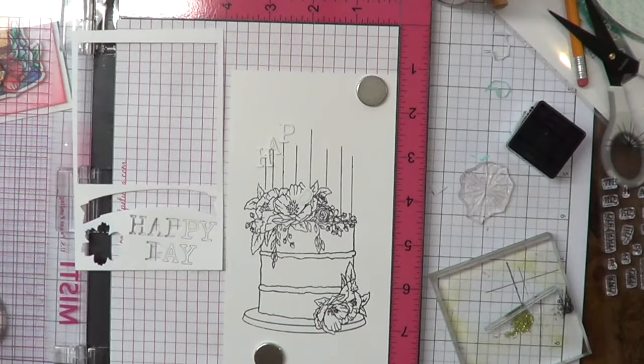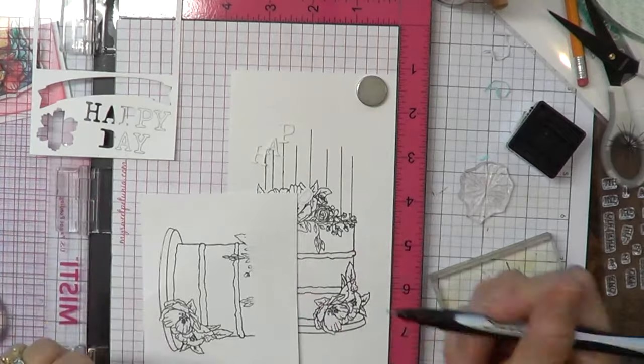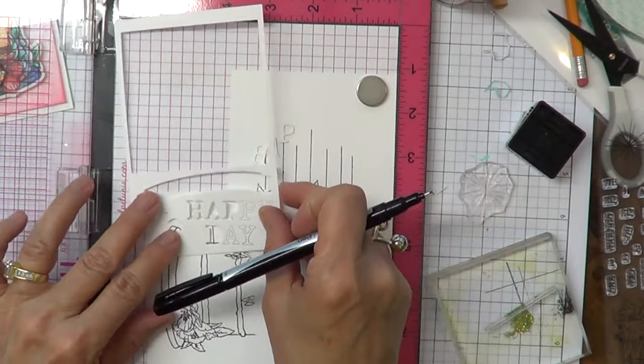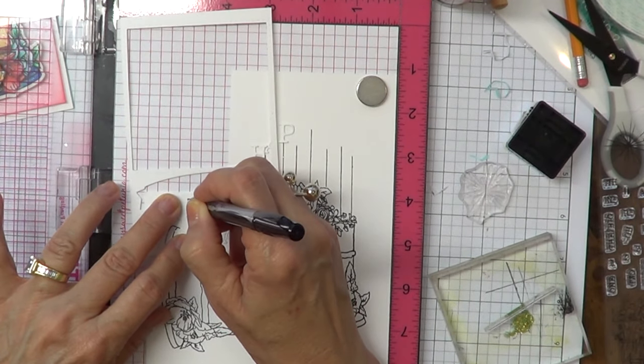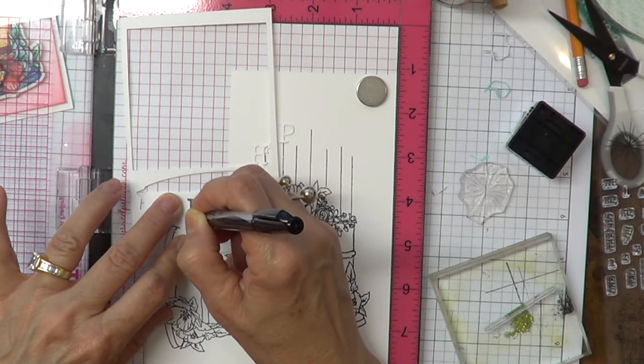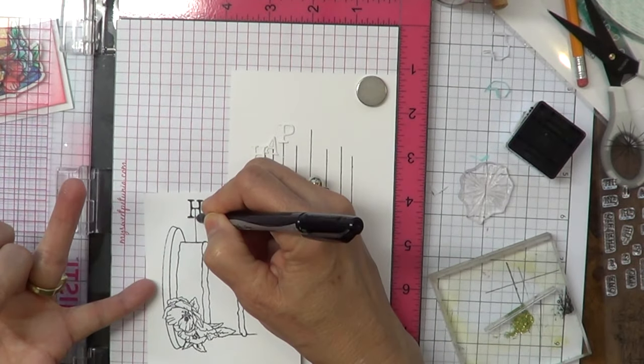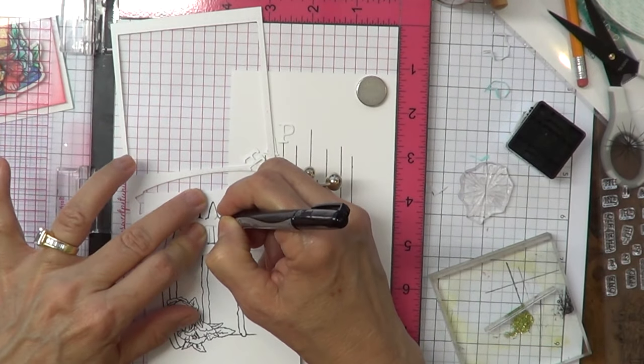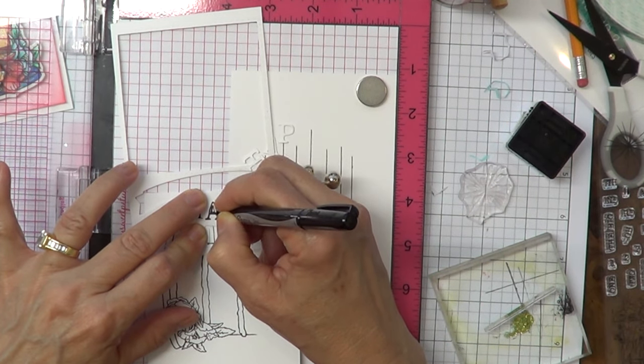I have a Sharpie fine tip marker and I just want to show you how easy it is. You could die cut the happy day and then just use it like a stencil. So I'm just drawing some candles here, just so you can see what I'm talking about. I'm using the die as a guide to draw the letters. I could do that on my cake instead of using the die cut. Sometimes I like to have a drawn look. The set is super versatile.